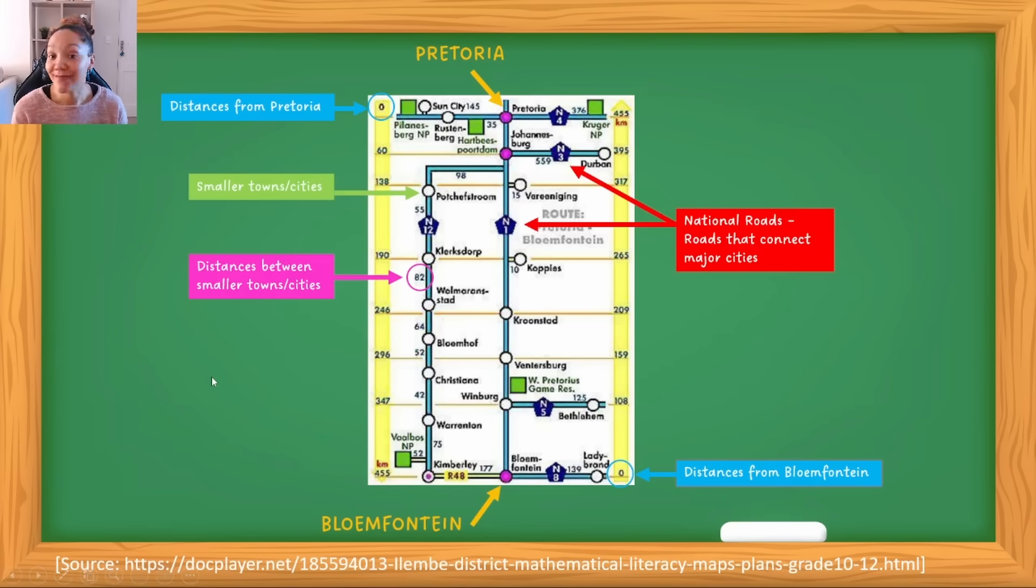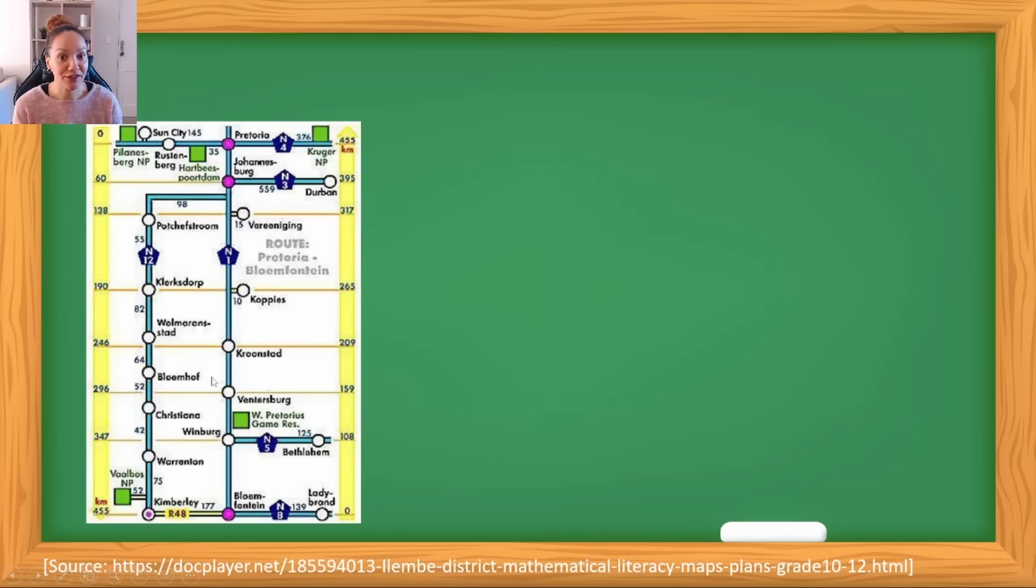Let's try and answer some questions. I'm using the same map and we'll answer various questions based on this map. The first question says: what is the total distance in kilometers from Pretoria to Bloemfontein? You'll see in the previous slide I showed that the distance is from zero right down to 455 on both sides. So your answer for the first question will be 455 kilometers.